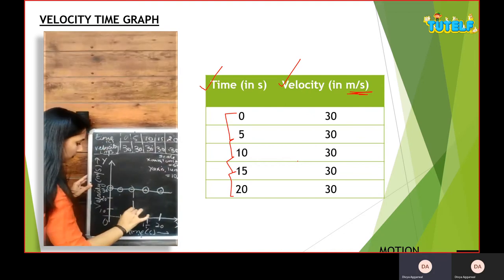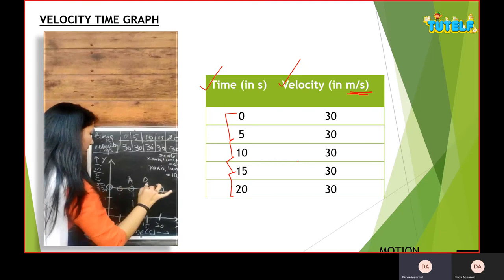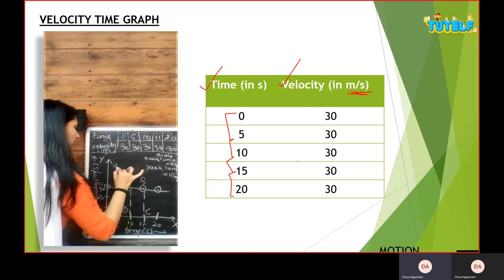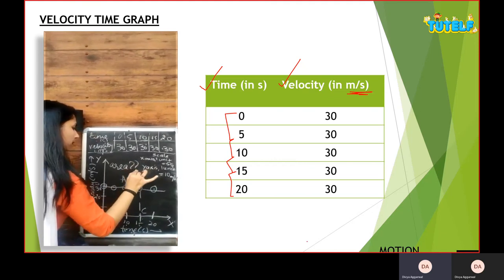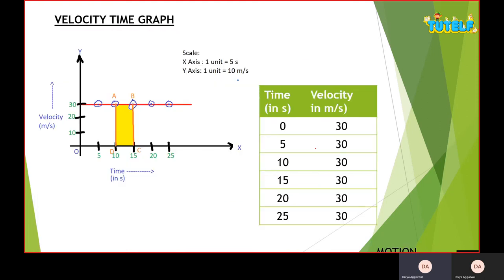Now I'll draw a perpendicular from both sides and name the points A, B, C, D, and I'll be finding the area under this line for ABCD. Let's have a look at this graph in a more visual form. As you can see, the area below is a rectangle, so the area is given by AB times BC.